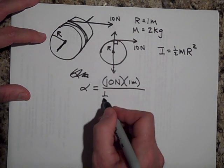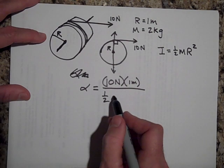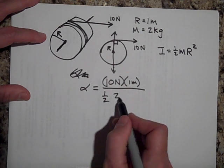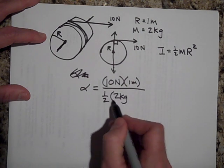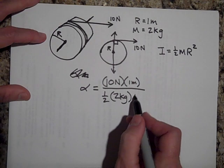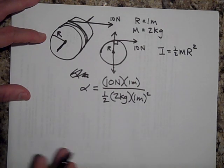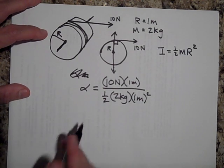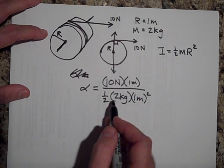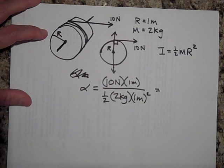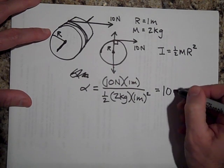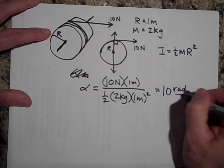So that's going to be one half M. So M is two kilograms in this case. And then R squared is going to be one meter squared. If we do the math, then that's 10 divided by one, that's 10 radians per second, radians per second squared.